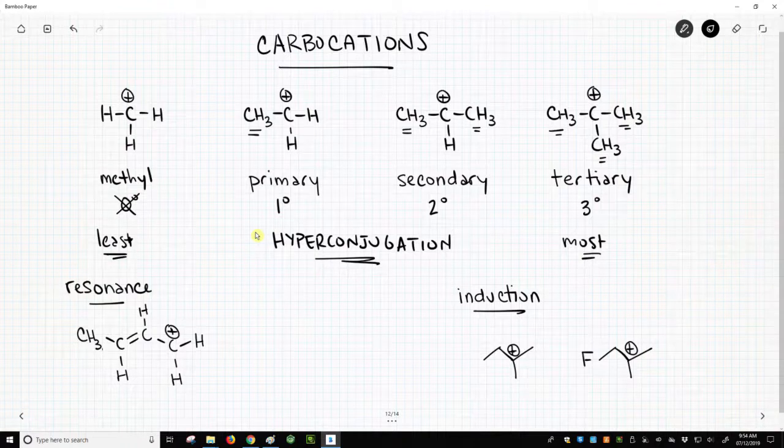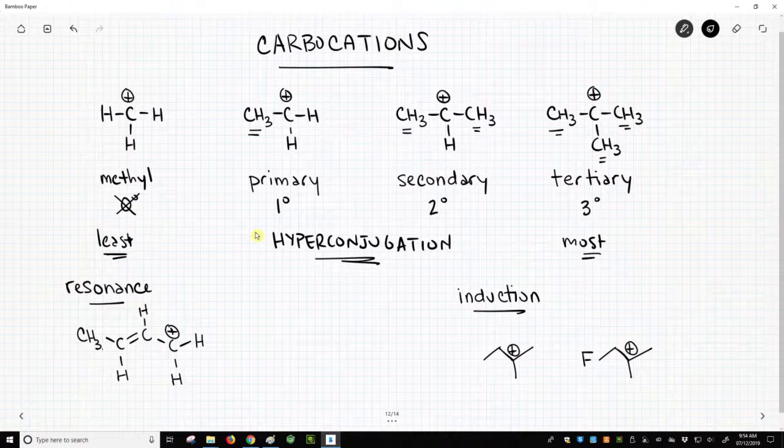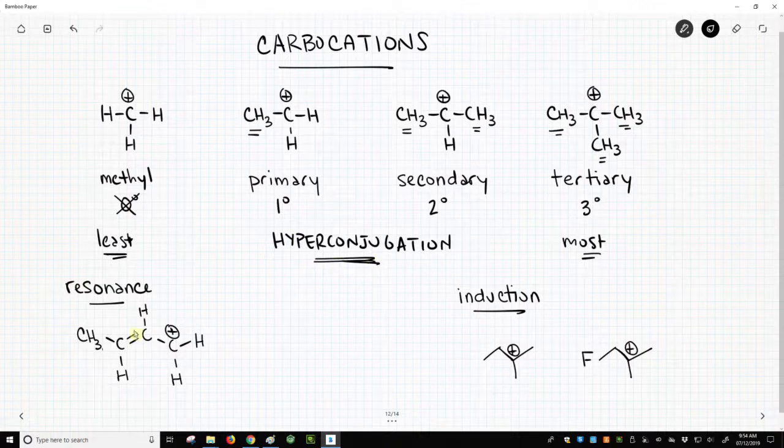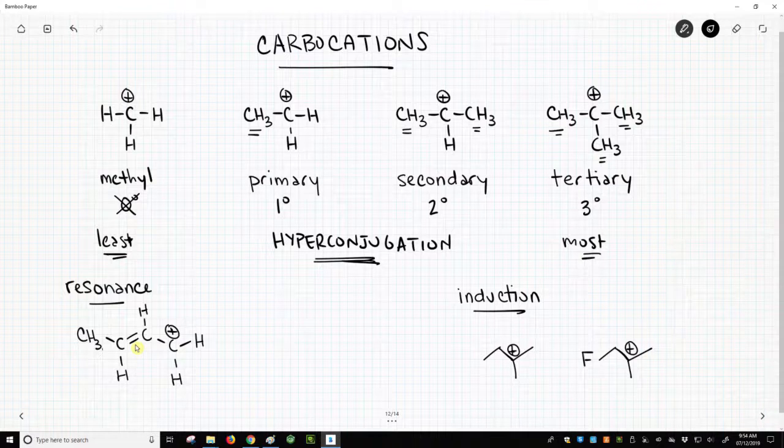You can also have resonance to stabilize a carbocation. So now we're talking about what kind of effects will stabilize or affect the stability of this positive charge. Hyperconjugation is one. Resonance is common with almost all charges. So we can break this carbon-carbon pi bond, swing those electrons over towards the carbocation.